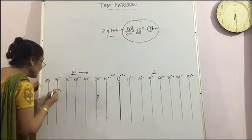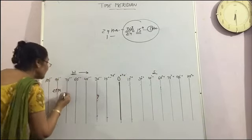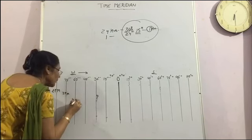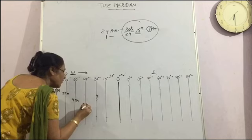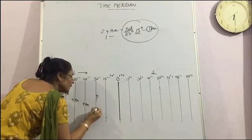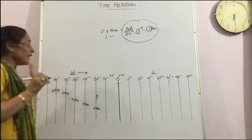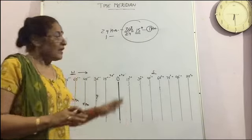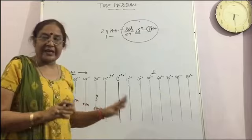Then this is 2 pm. Then we add 3 pm, 4 pm, 5 pm and 6 pm. So the time on the 30 degree west is 6 pm. In this way we can calculate the time.